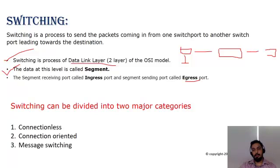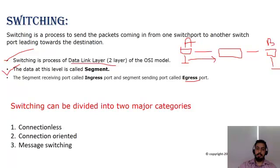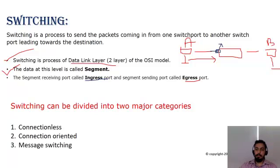Let's assume we have two computers connected to a switch and they would like to share data with each other. Computer A sends data to Computer B. The port where the data is received on the switch is the ingress port, and the port connected to Computer B, from which data is sent out, is the egress port.